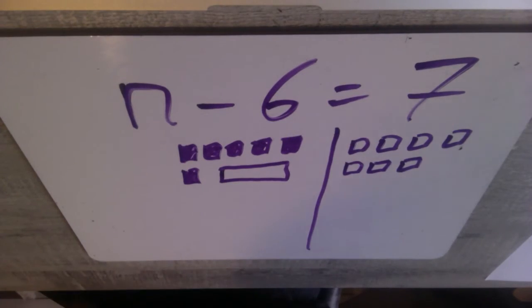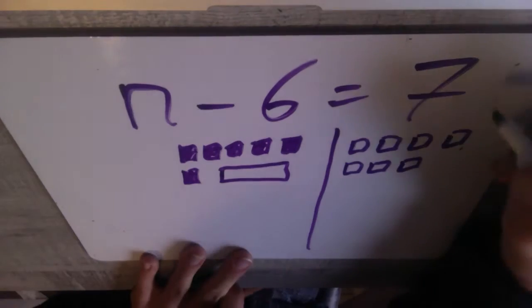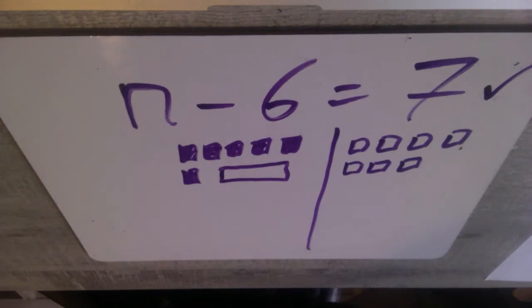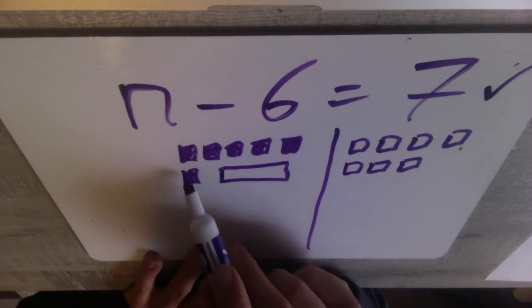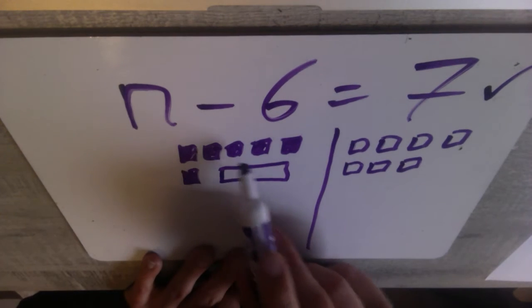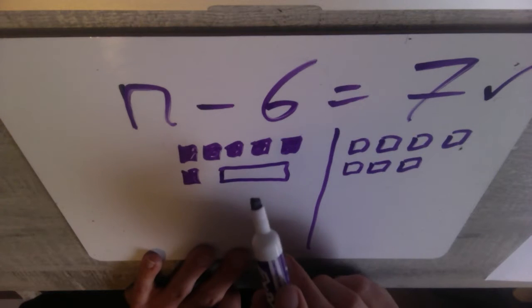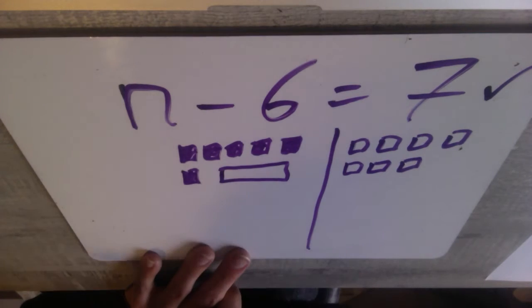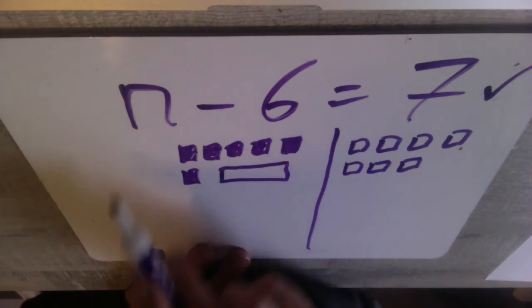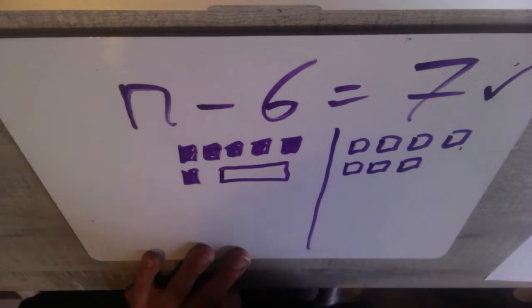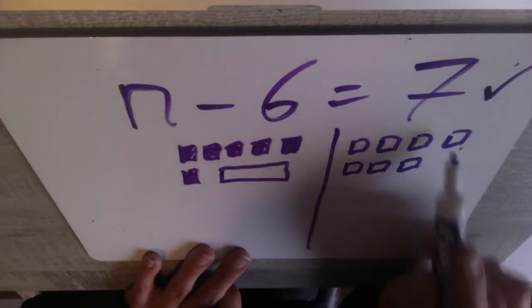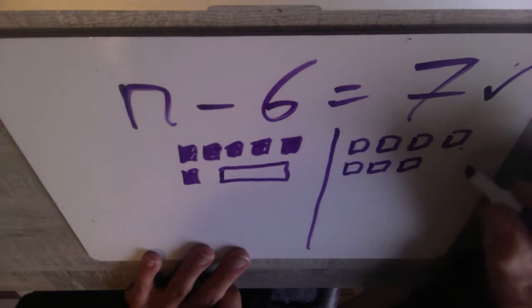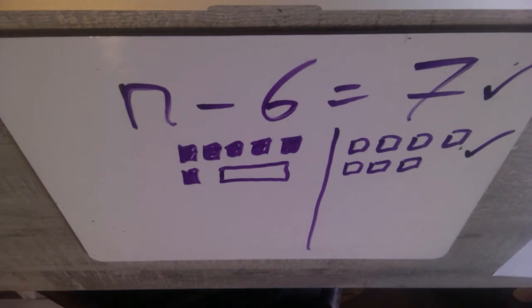So there's one mark already if you wrote your equation. Your second mark comes from — did you show your work? Do you have one, two, three, four, five, six negative tiles and your variable shown on the left side? And then on my right side I have one, two, three, four, five, six, seven positive tiles. There's my second mark.